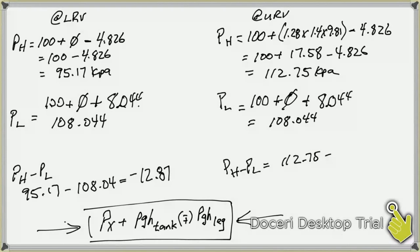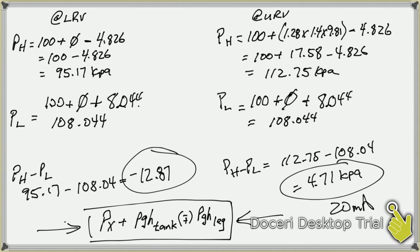We do our subtraction, minus 108.044, should give us 4.71 kPa. So this is our 20 milliamp value, this is our 4 milliamp value, and that's how you do question 21.